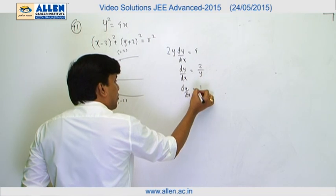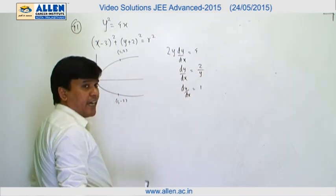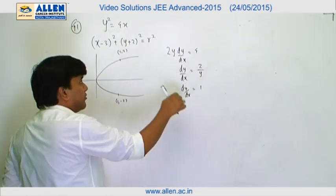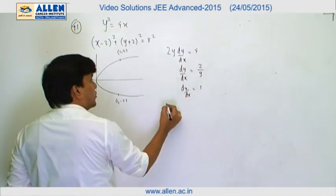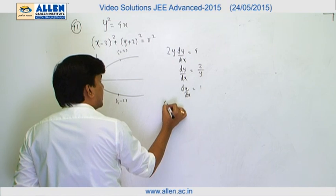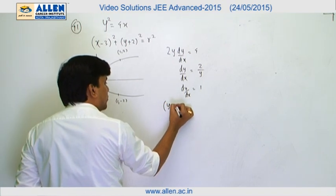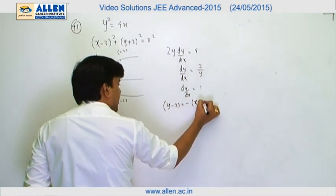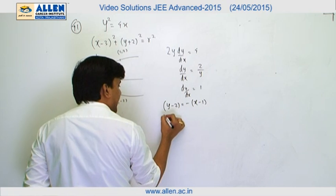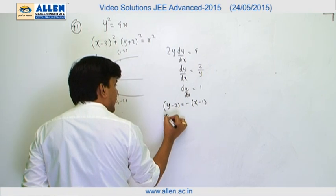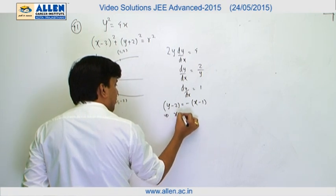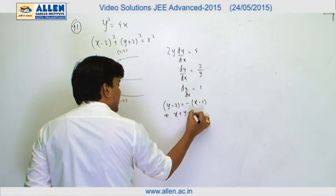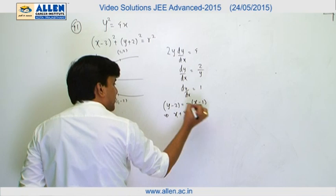So this is the slope of the tangent, and we need the slope of the normal, which will be minus 1. So the equation of the normal is y minus 2 equals minus 1 times (x minus 1), and this simplifies to x plus y minus 3 equals 0.